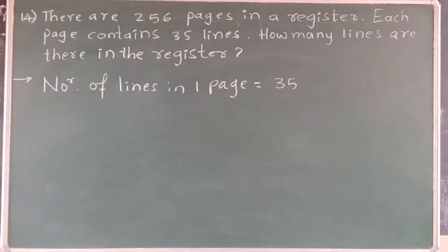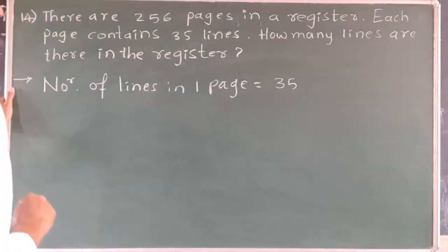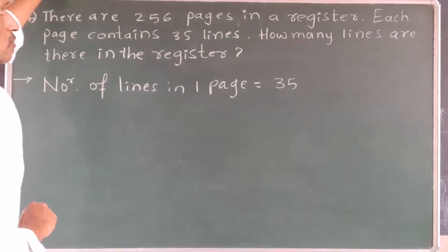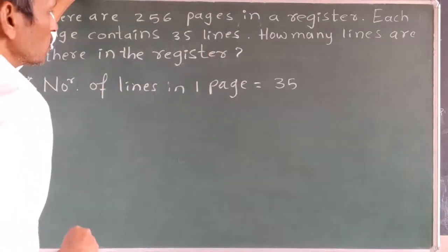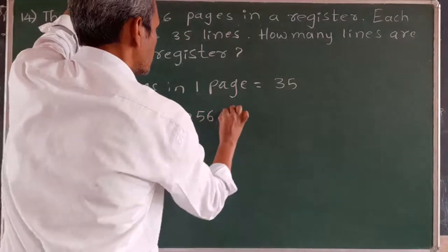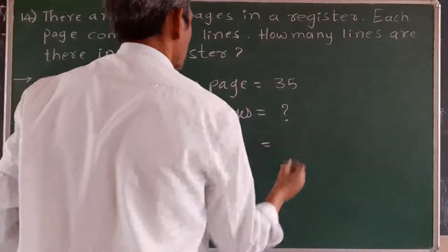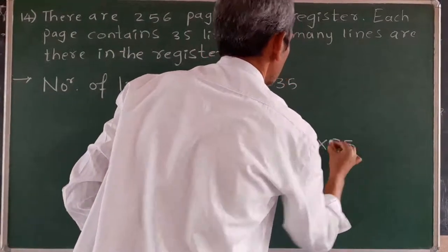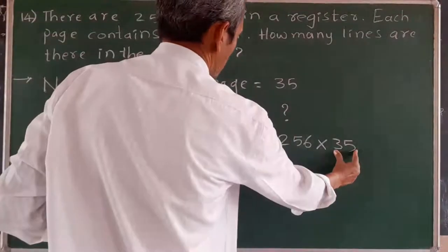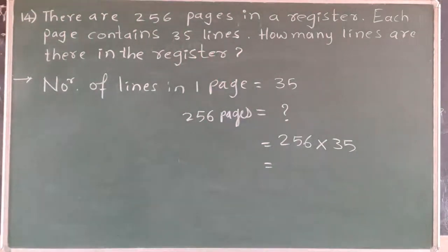Totally 256 pages are there. We know how many lines are in one page. Now we should find the number of lines in 256 pages. So, number of lines in 256 pages — if we multiply the number of pages, 256, by 35, we will get the number of lines in one page times all pages. The result is 8,960 lines.